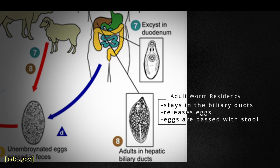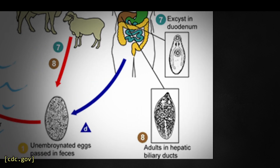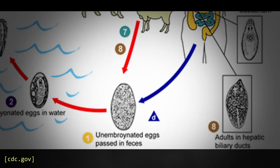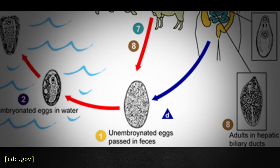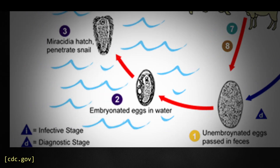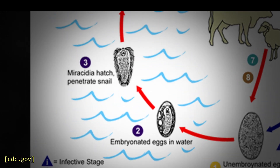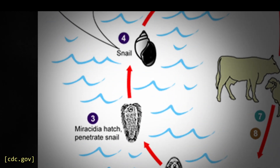Once mature, adult Fasciola worms release unembryonated eggs into the biliary ducts, and the eggs are then excreted together with feces. The eggs then embryonate in freshwater, a process that takes around 9 to 15 days, and the embryonated eggs hatch into miracidia, which seek out their first intermediate host, a typical freshwater pond snail.